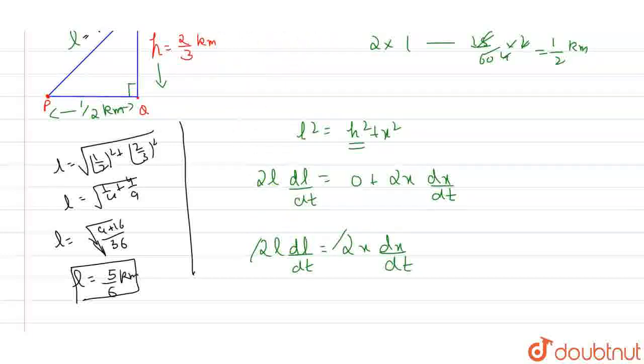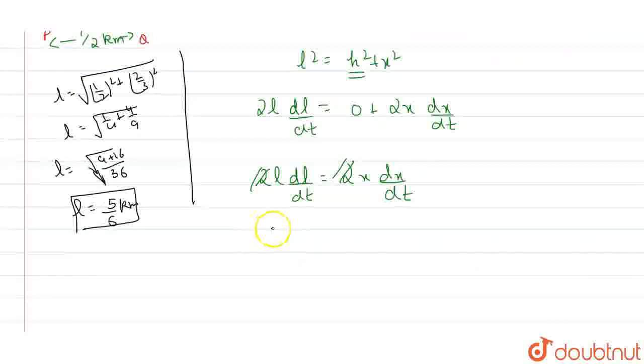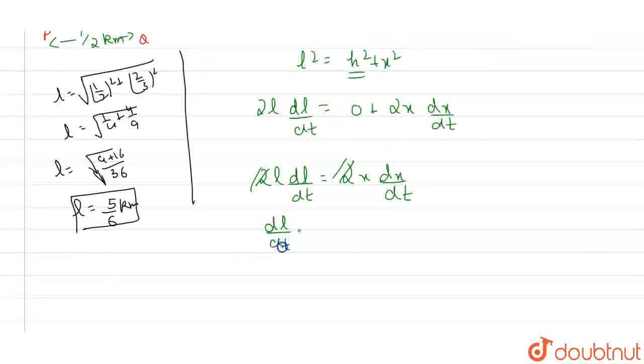So we remove this 2 and this 2, we're left with this one: dl by dt equals x by l times dx by dt.